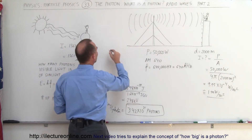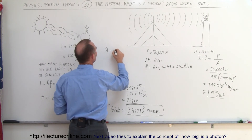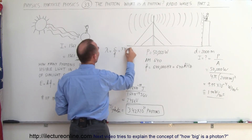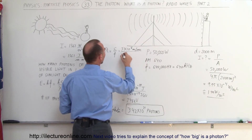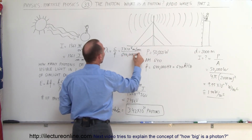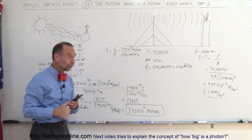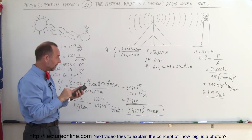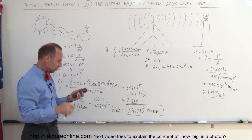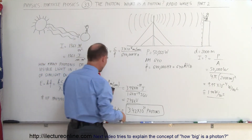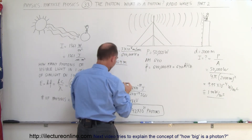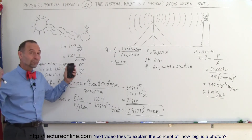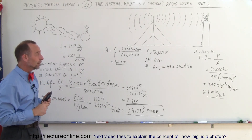Let's find the wavelength of this radio broadcast station. Lambda equals the speed of light divided by the frequency: 3 times 10 to the 8 meters per second divided by 640,000 hertz gives us a wavelength of about 469 meters. That's almost five football fields long — very long wavelengths for AM broadcasting radiation.